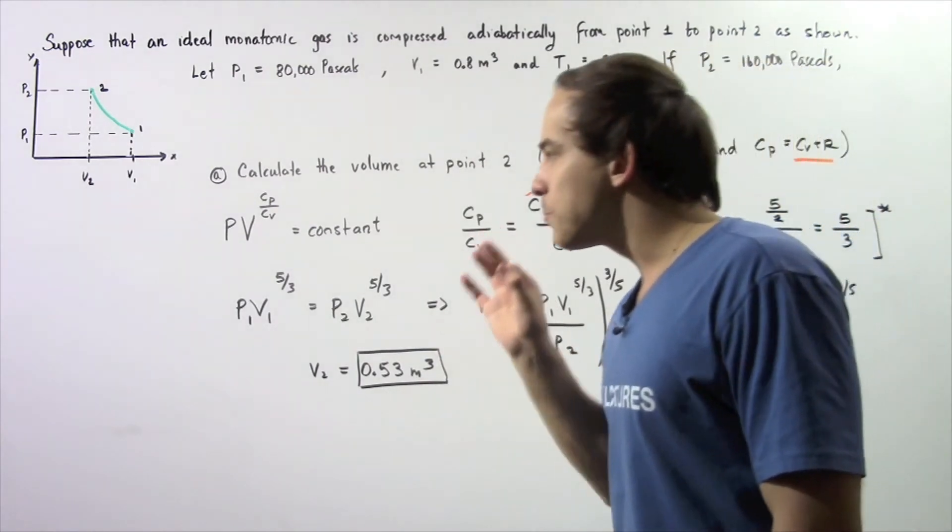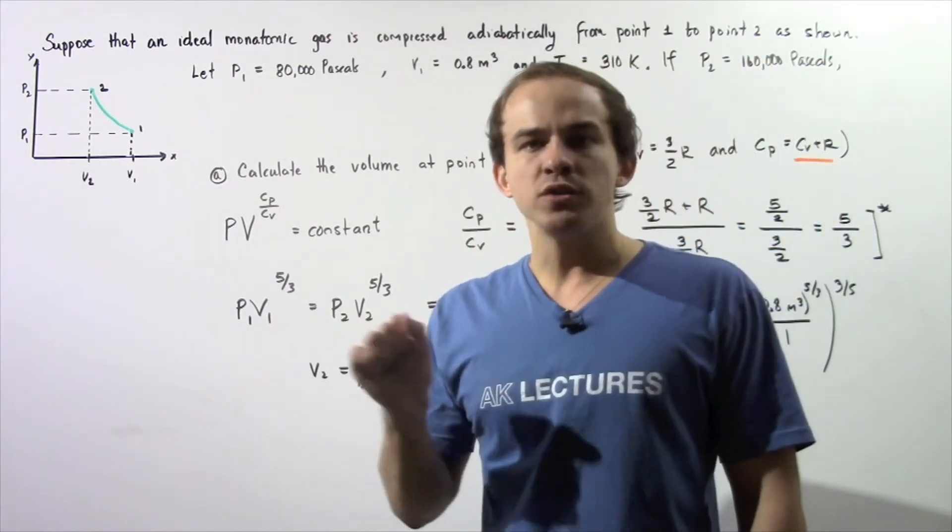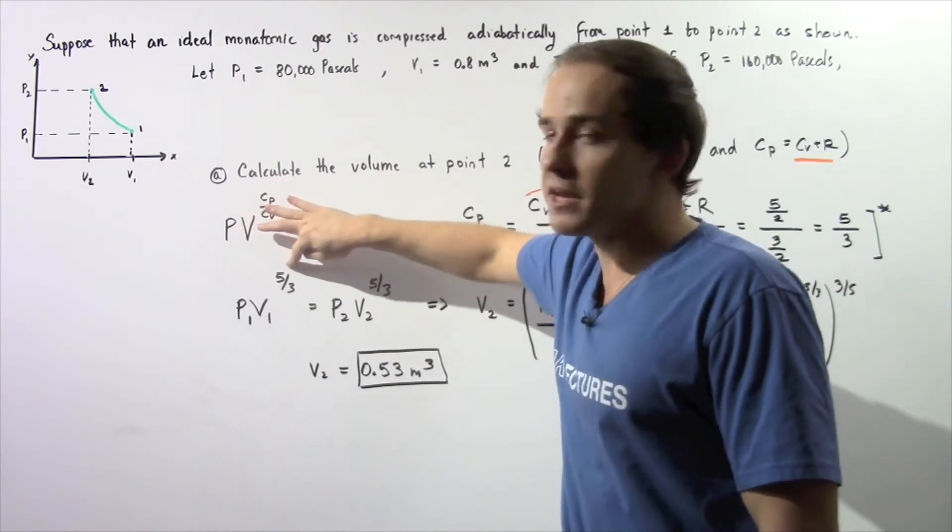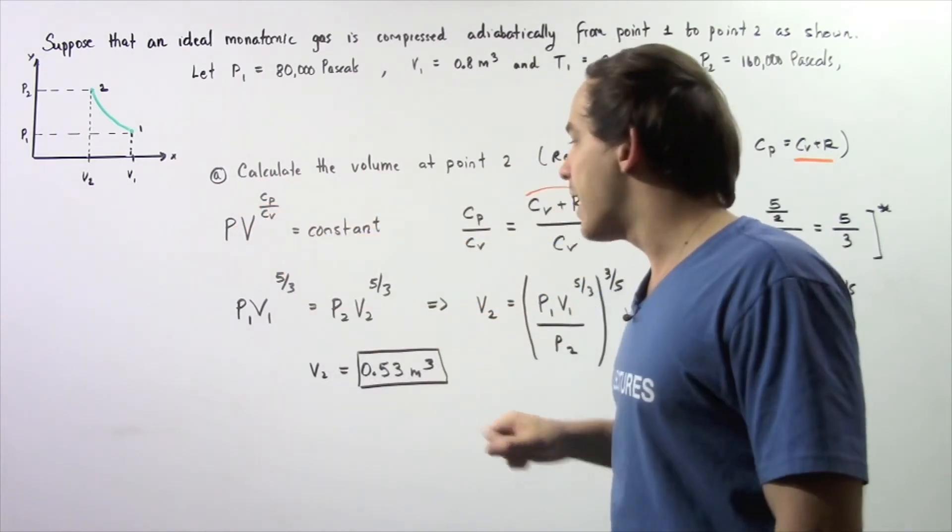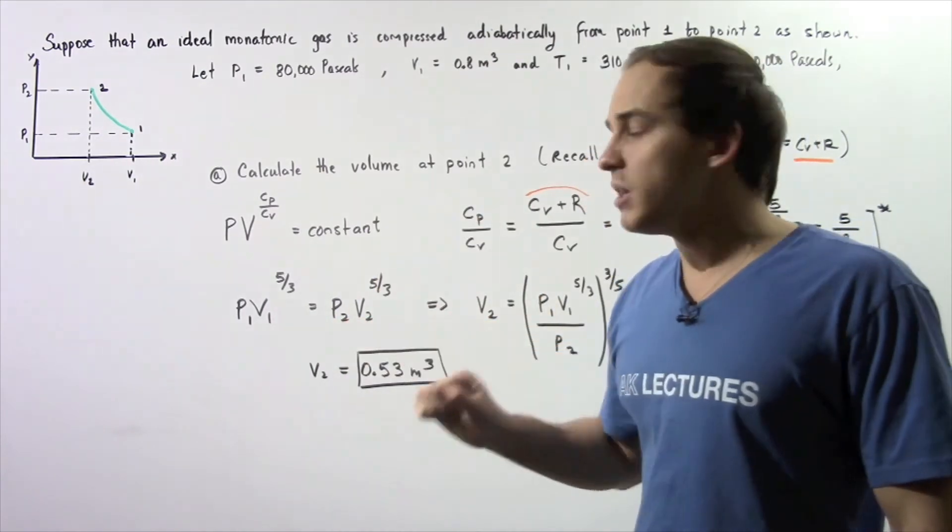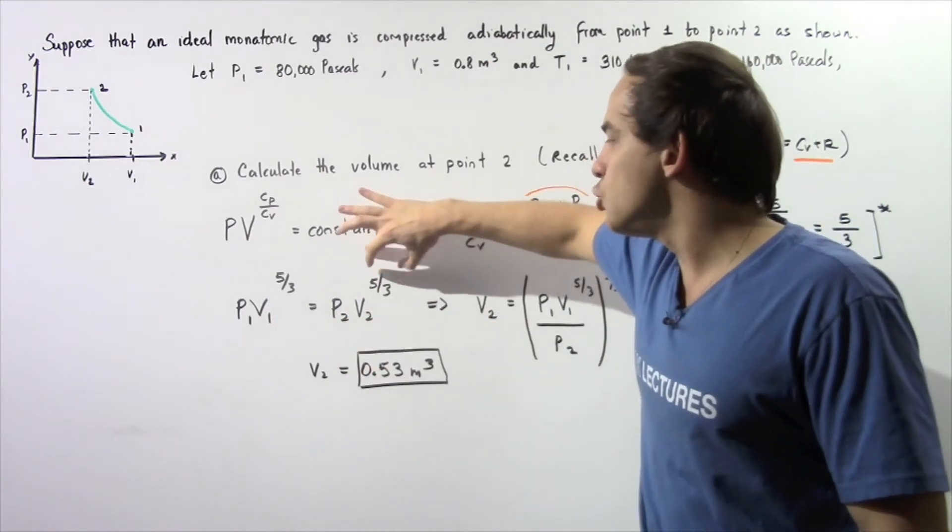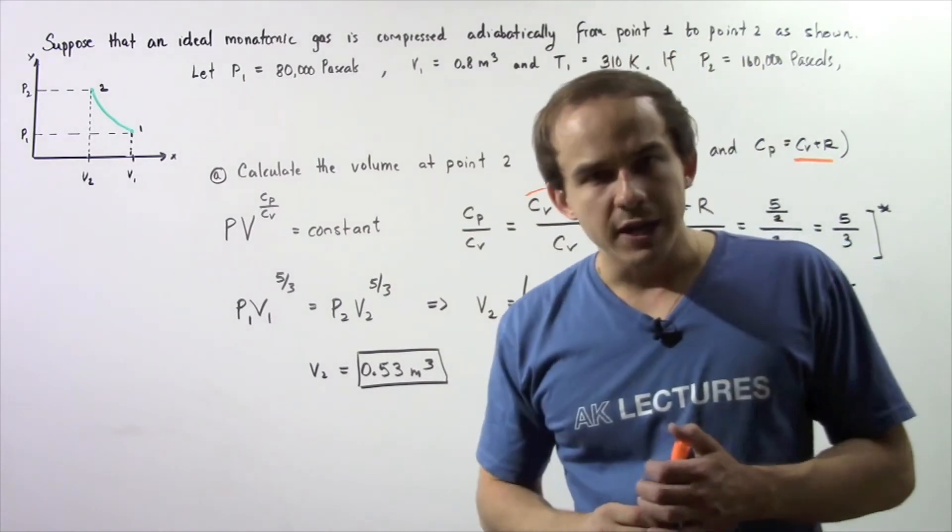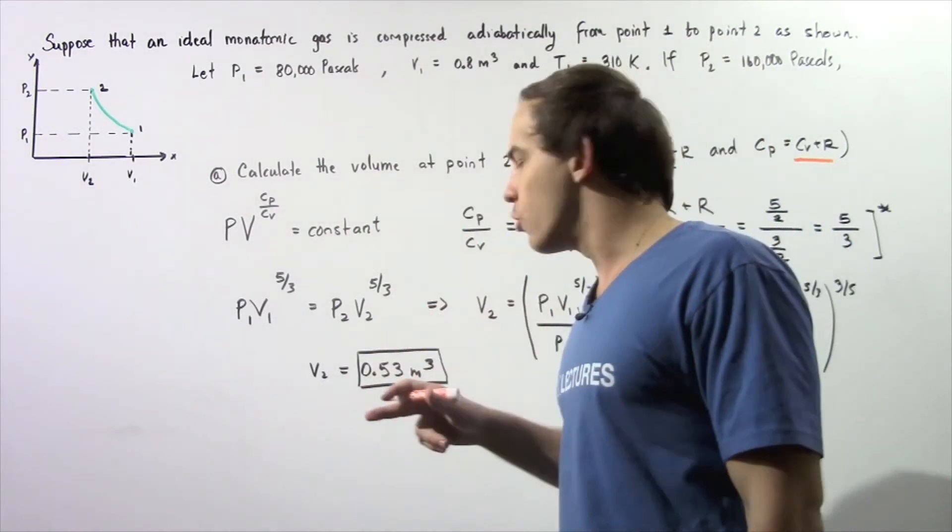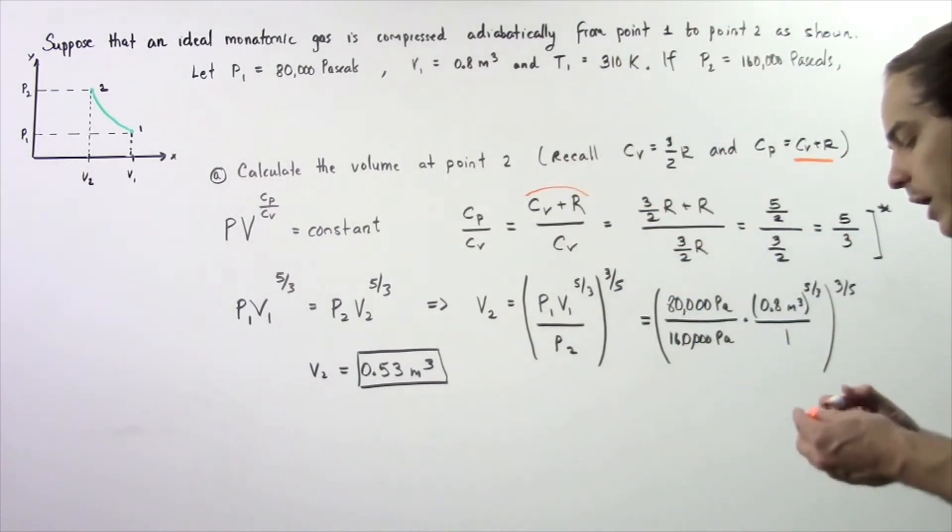So the pressure at point 1 multiplied by the volume at point 1 raised to 5/3 is equal to the product of P2 multiplied by V2 raised to 5/3. We essentially want to solve for V2.